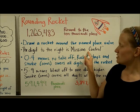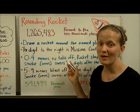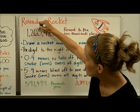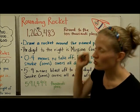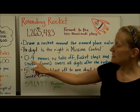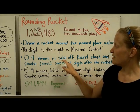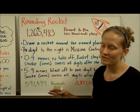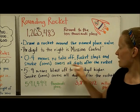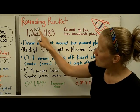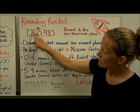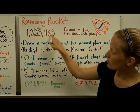The digit to the right is mission control. If you want to mark it — I'm going to put a little MC on top — but you could underline it or circle it, whatever you want to do. 0 through 4 on mission control means that the rocket does not take off; it stays right where it is. The rocket stays and smoke, or zeros, cover all the digits after the rocket. So if mission control had been 0 through 4, this rocket would stay and we would put zeros over all of those digits.